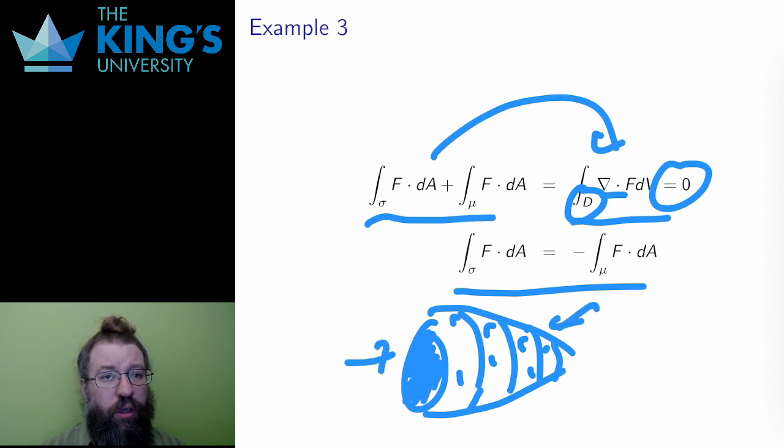And why does this work? Well it works because mu and sigma share a boundary, and thus close off each other to make a closed surface.